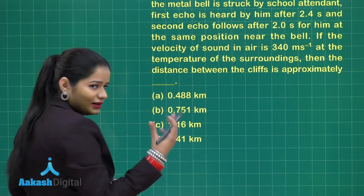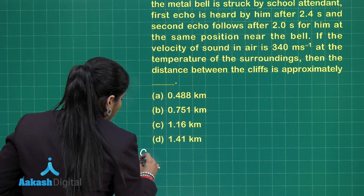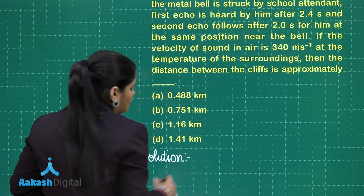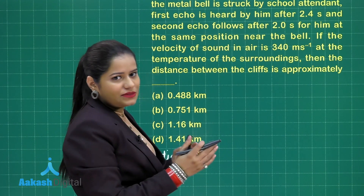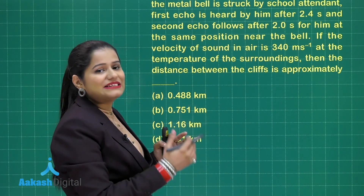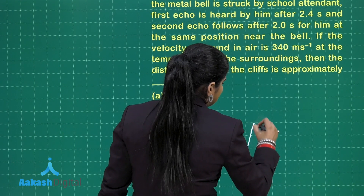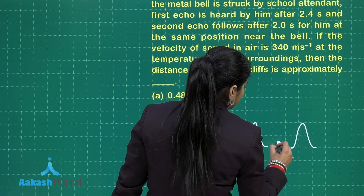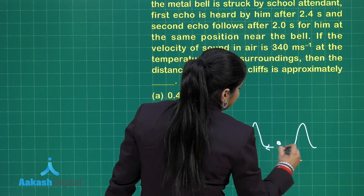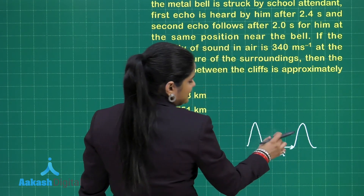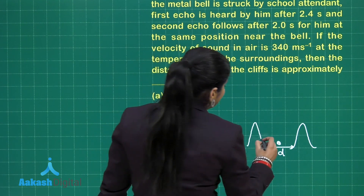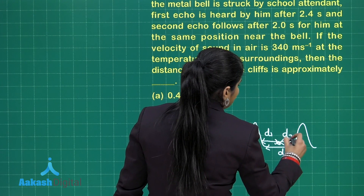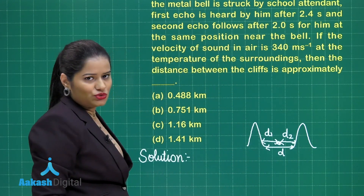This is a pretty simple question based on the formula for formation of echo. Two echoes are formed. If I say that the distance between the two cliffs is D — these are the two cliffs and here is the position of the school — the school is not necessarily lying exactly in between the cliffs. So if this distance is D1 and this is D2, then D is going to be the sum of these two.